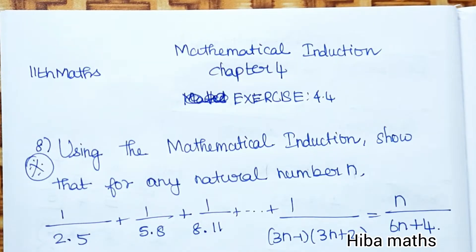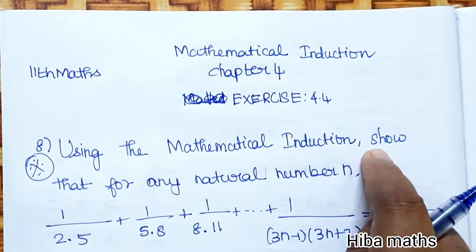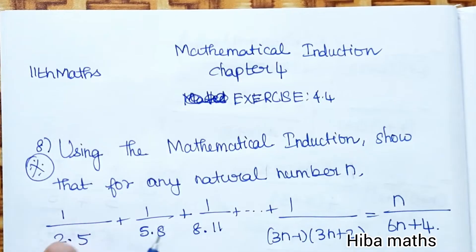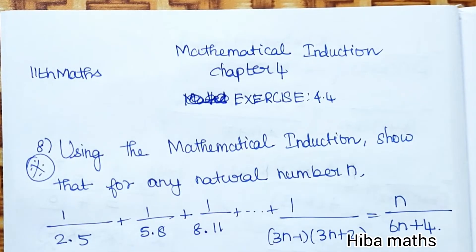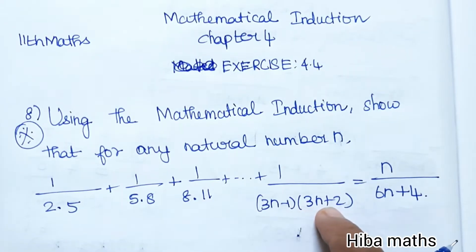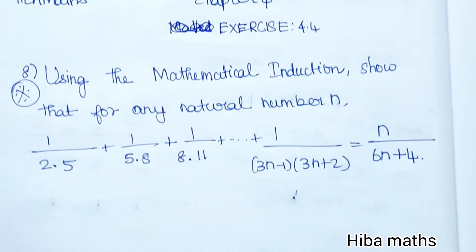Hello students, welcome to Hibamax 11th standard, Chapter 4: Mathematical Induction, Topic 4.4. The question is: using mathematical induction, show that for any natural number N, 1/(2×5) + 1/(5×8) + 1/(8×11) + ... + 1/((3N−1)(3N+2)) is equal to N/(6N+4).